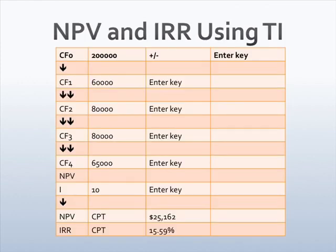Let's compute the NPV using the TI calculator. Clear the memory of the calculator and make sure the payments are set to one payment per year. Press the CF key — you will see CF0 on the screen. Enter $200,000, press the plus/minus key, and press enter. Press down arrow; you will see C01 — input $60,000 and press enter. Press down arrow twice; you will see C02 — input $80,000 and press enter. Press down arrow twice; you will see C03.